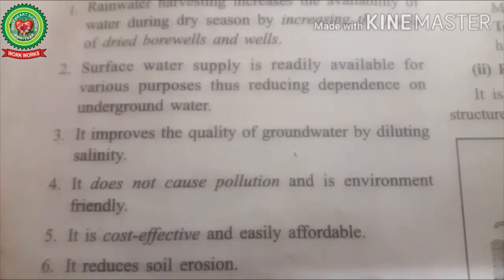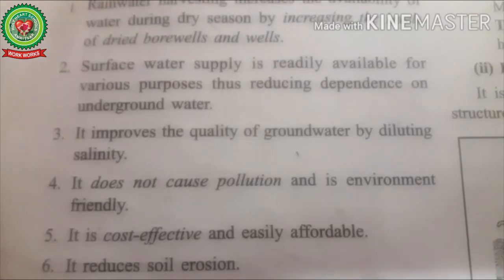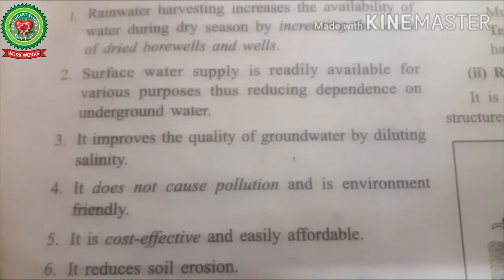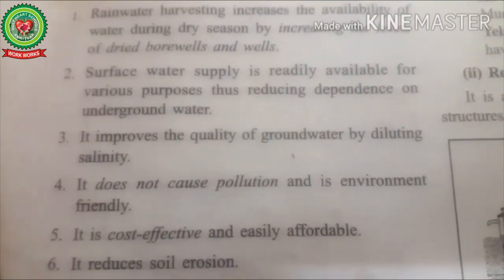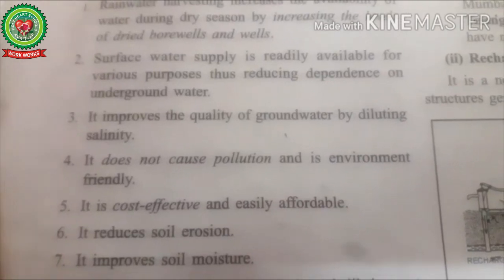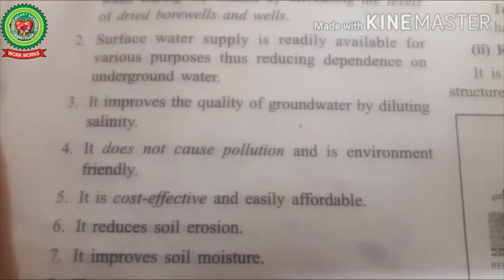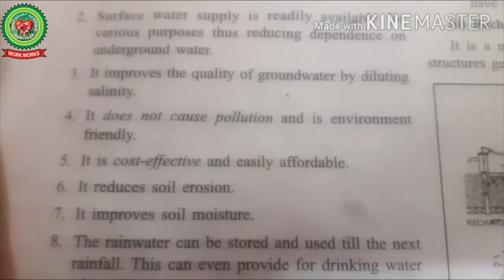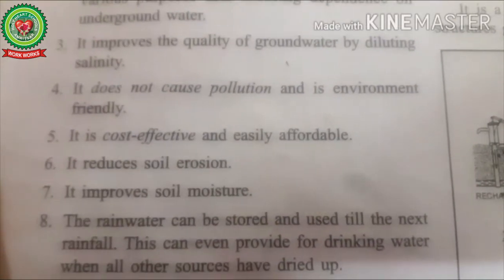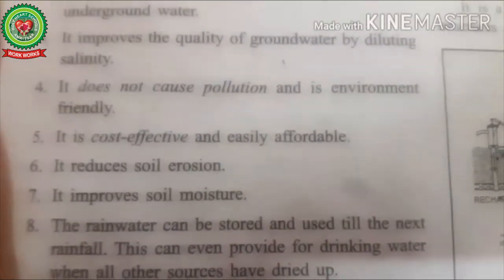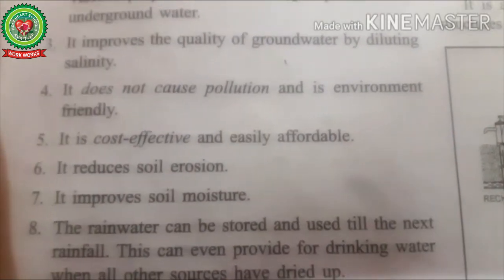With no flooding there is no surface runoff to erode the soil, so storing water prevents soil erosion. Soil erosion means removal of the top layer of soil by wind and water. Rainwater harvesting also improves soil moisture, helping the soil retain moisture. The stored rainwater can be used until the next rainfall and can even provide drinking water when all other sources have dried up — including canals and other water bodies.